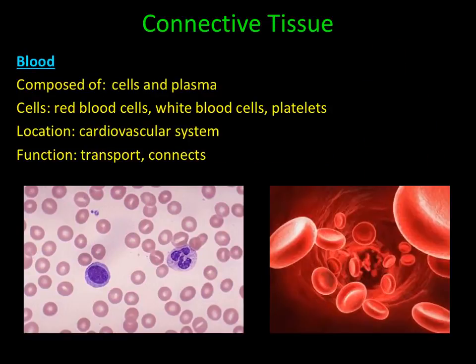Finally, the last type of connective tissue is the only type that is a fluid found within the body: blood. Blood is composed of two parts — a solid part consisting of cells, and a liquid part called the plasma. The different types of cells found within blood are red blood cells, white blood cells, and platelets. Blood is part of the cardiovascular system, and its primary function is to transport nutrients or waste products and to connect other systems to one another. Blood will be discussed in more detail in future lectures.